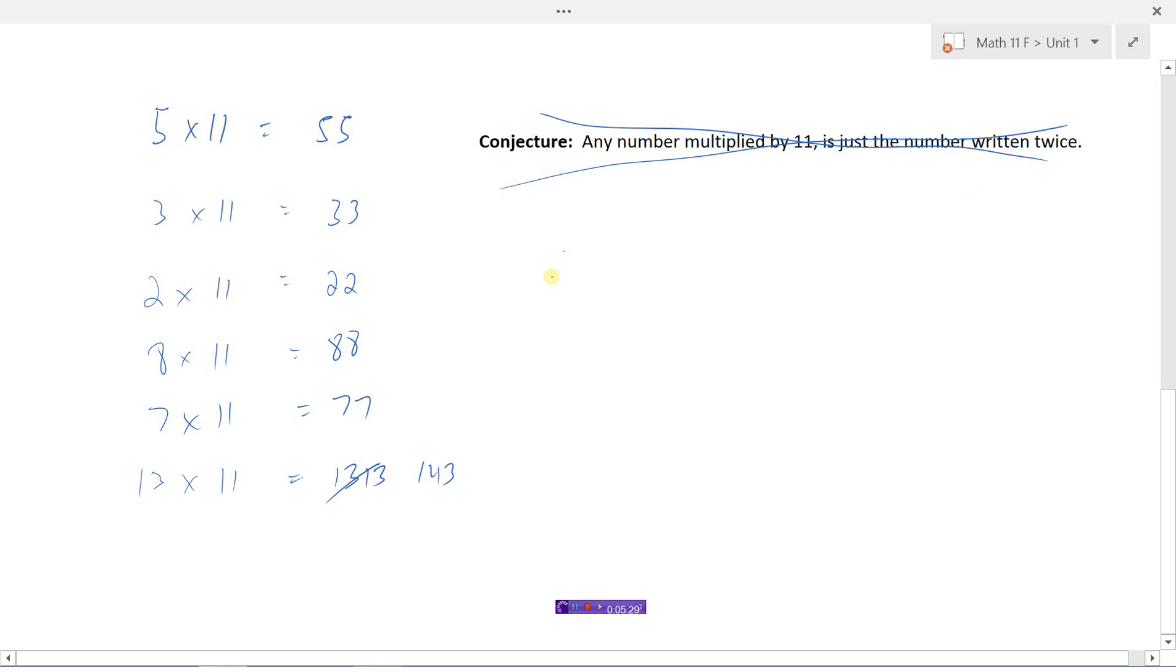Because what I've done is I've found what's called a counter example. A counter example is just an example that didn't match with my conjecture. It was against. Counter means like against.